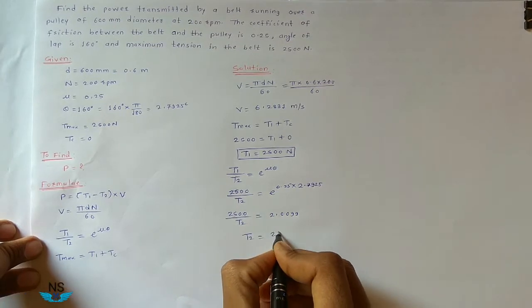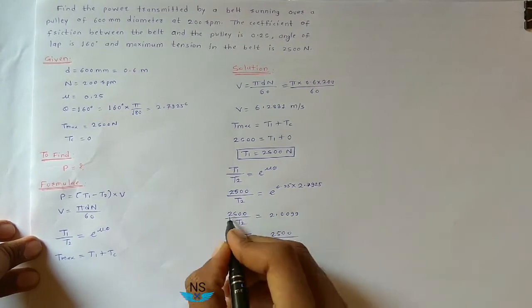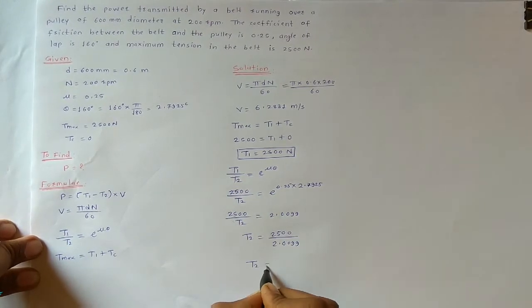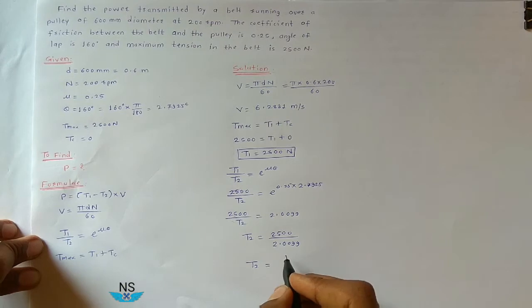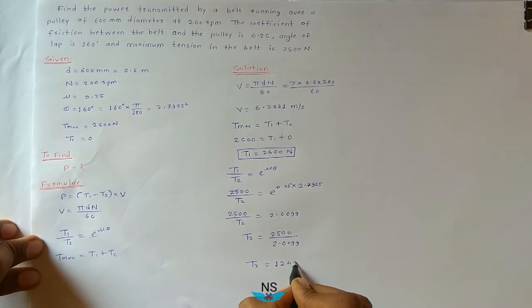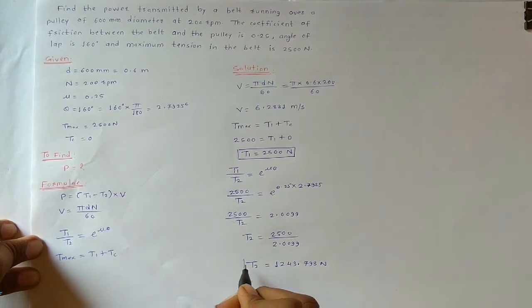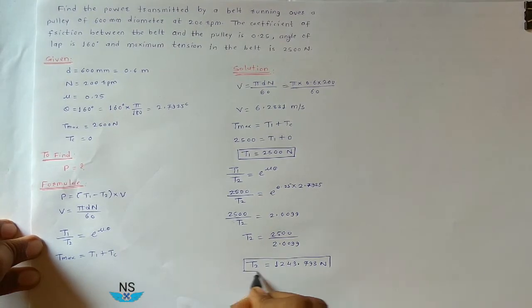So T2 is equal to 2500 divided by 2.0099. T2 becomes 1243.793 Newton. This is the value of T2.